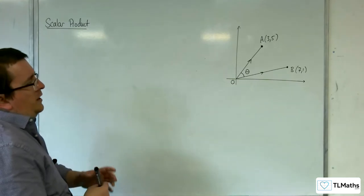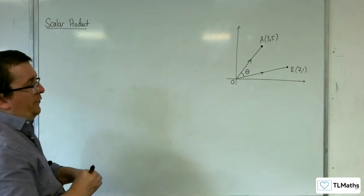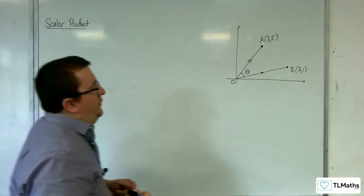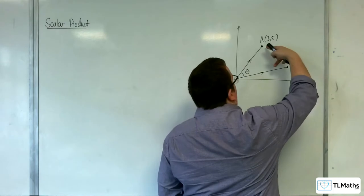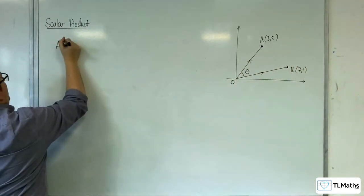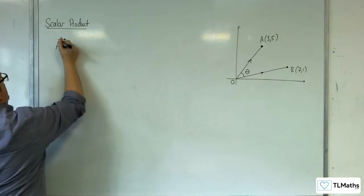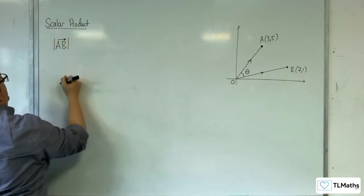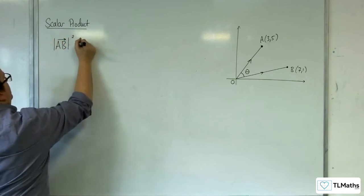So the cosine rule would say that the length of this side squared, so the vector AB, the length of that side squared,